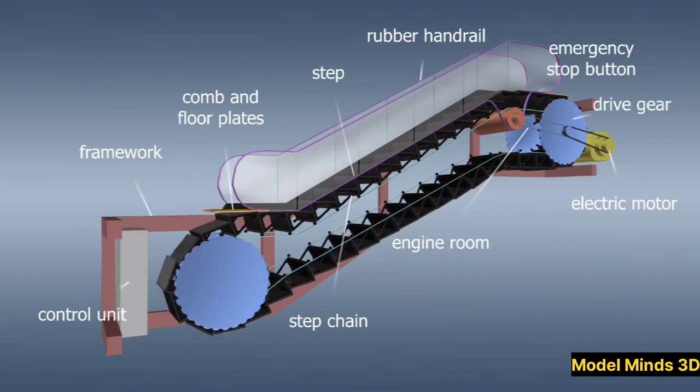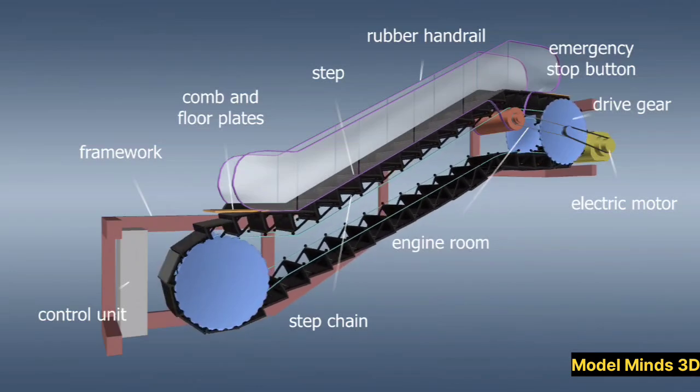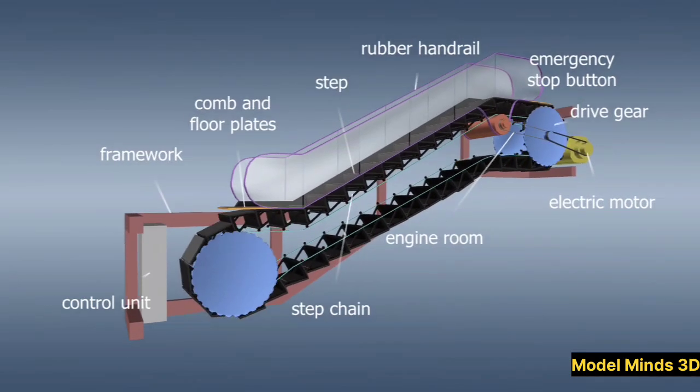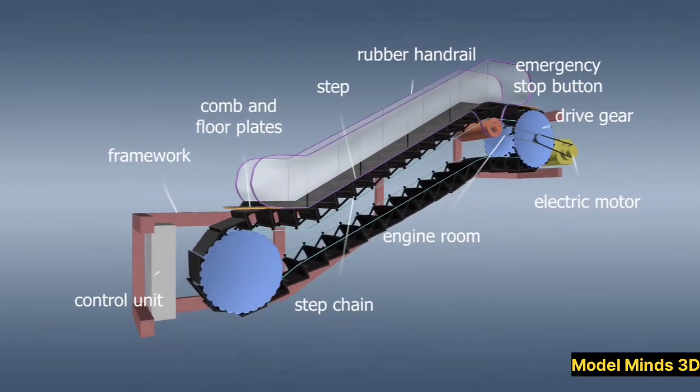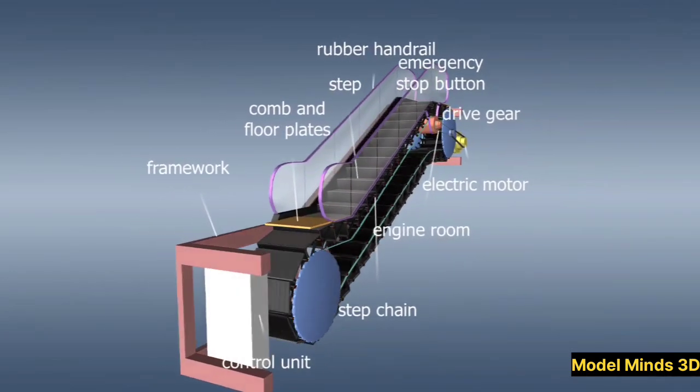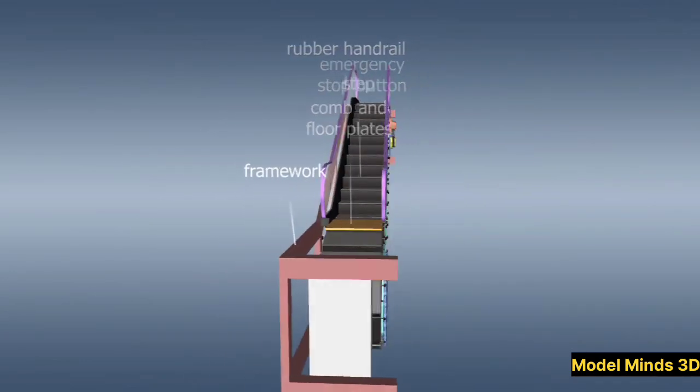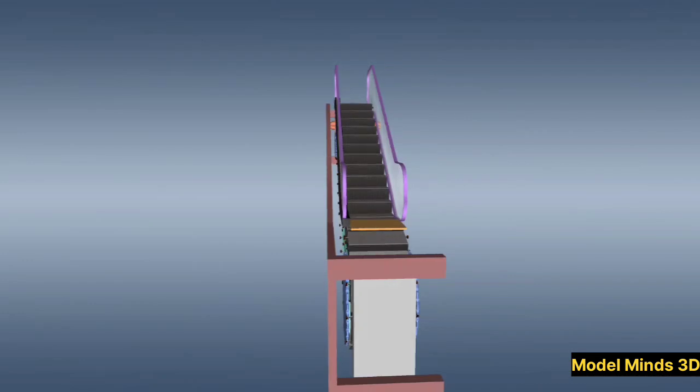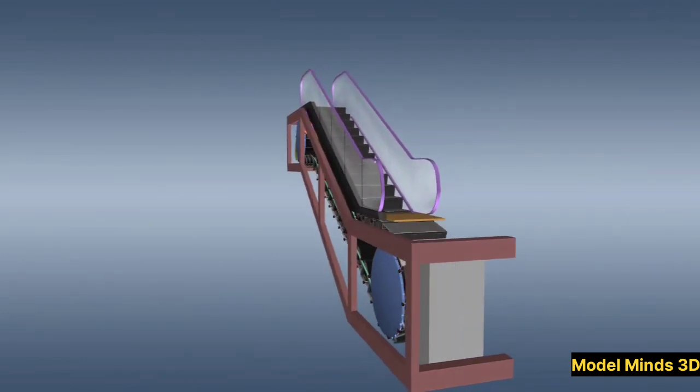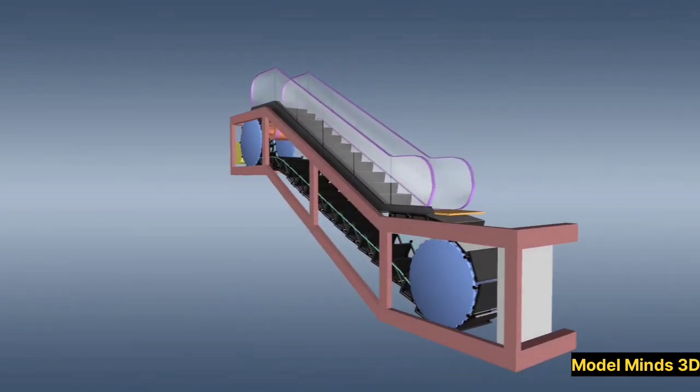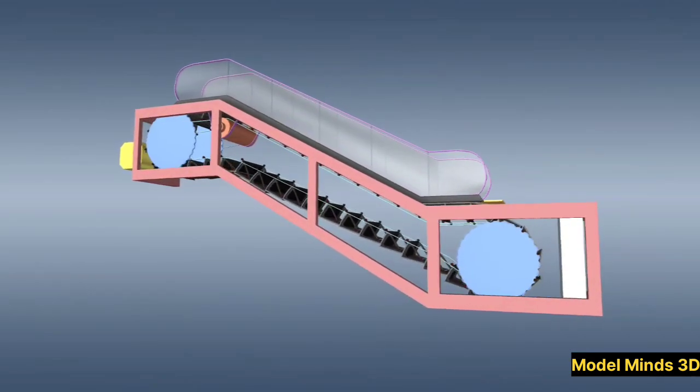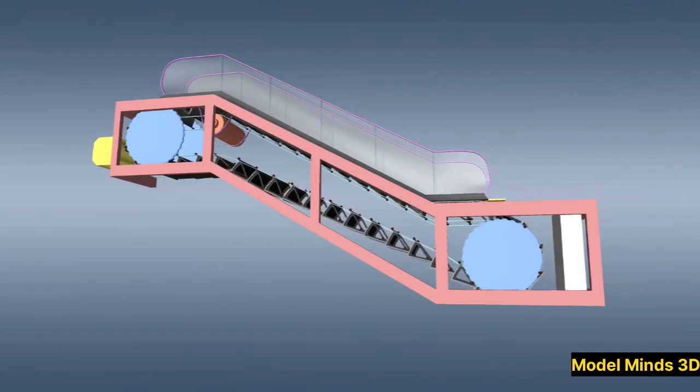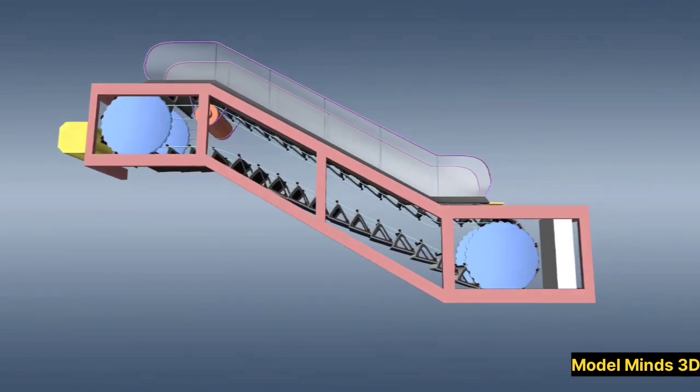Fun facts about escalators. Now that you understand how escalators work, here are some fun facts you might not know. The world's longest escalator is over 800 feet long and is located in Hong Kong. The first working escalator was patented in 1892 and was originally called a moving staircase. Some modern escalators are designed to reverse direction based on traffic flow using smart sensors. Certain high-tech escalators automatically slow down when not in use to save energy.